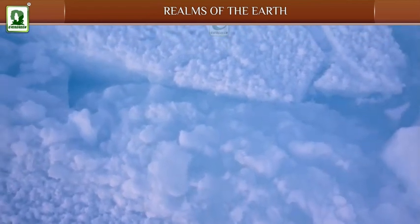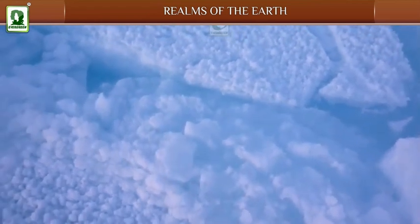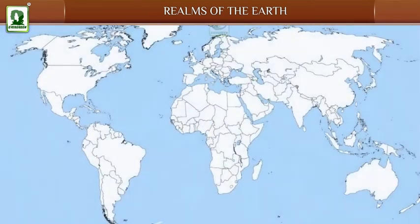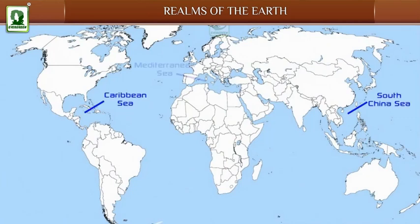In addition to these major oceans, there are branches of oceans called seas. The larger seas are the South China Sea, the Caribbean Sea, and the Mediterranean Sea.